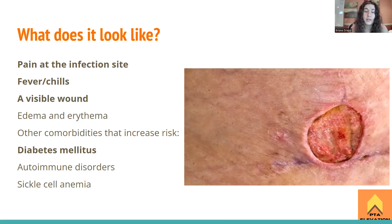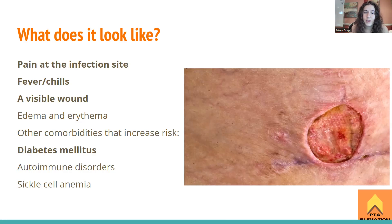Anybody with an autoimmune disorder has a poor ability to fight off infection, which could let a staph infection go rampant. Sickle cell anemia is also a risk factor — due to problems with blood flow and poor perfusion to tissues, white blood cells have less ability to get to where they need to go to fight off the infection.